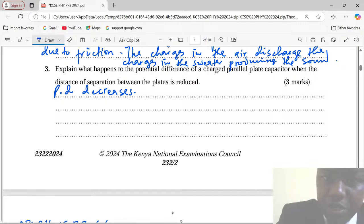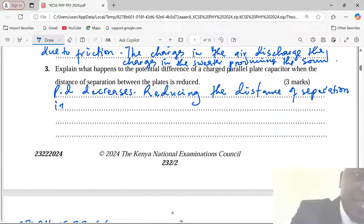We should recall that reducing the distance of separation increases the capacitance. And you should recall that capacitance is usually given by Q out of V, because charge is given by CV, then the capacitance C is given by charge Q out of V.